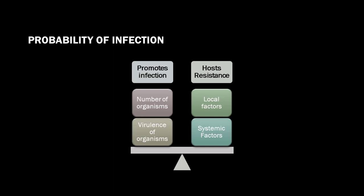As depicted in this slide, there is a quasi-formula such that the probability of infection is directly proportional to the number and virulence of organisms present and inversely proportional to host resistance. Host resistance can be separated into systemic and local factors.